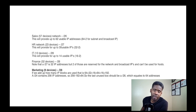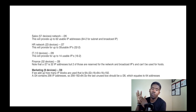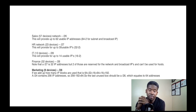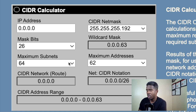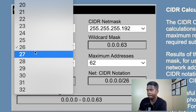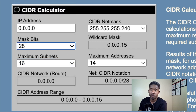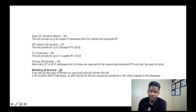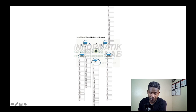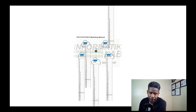Marketing has only 9 devices. Remember that IT had 12 devices and we selected /28 because /28 supports up to 14 usable IP addresses. Since 9 devices fits within 14, we also select /28 for Marketing in the network diagram.